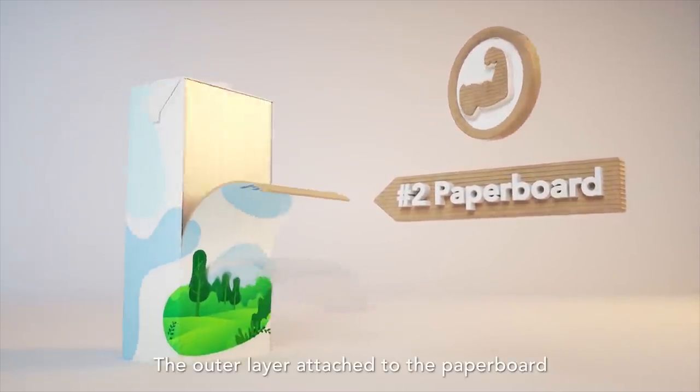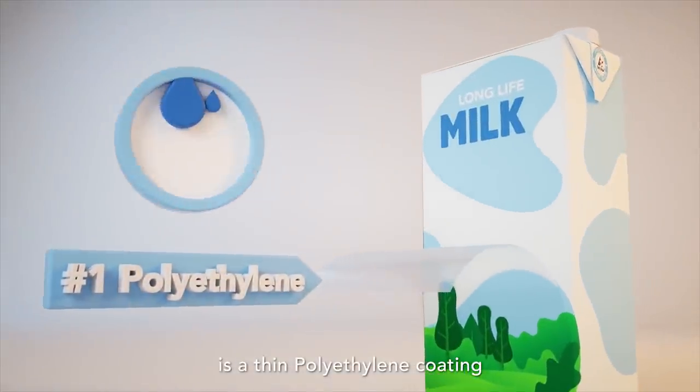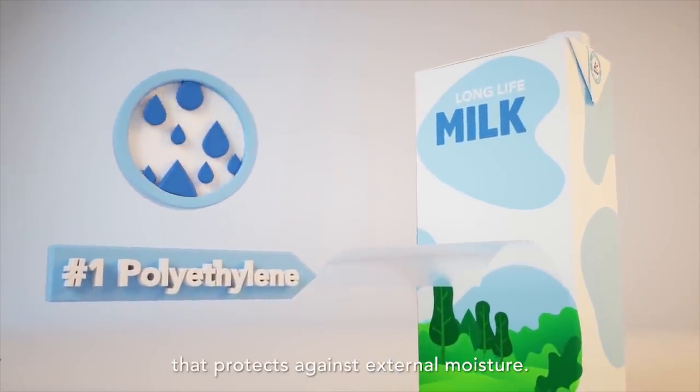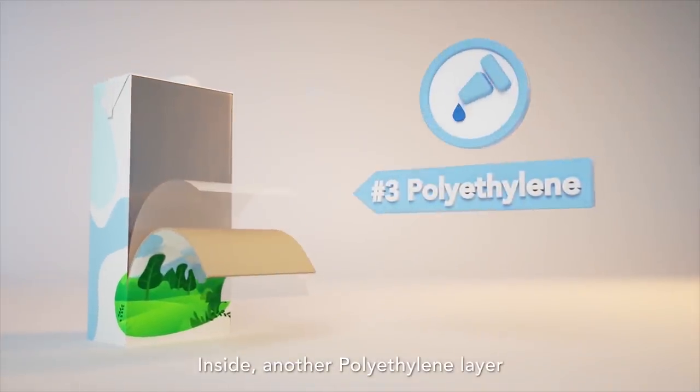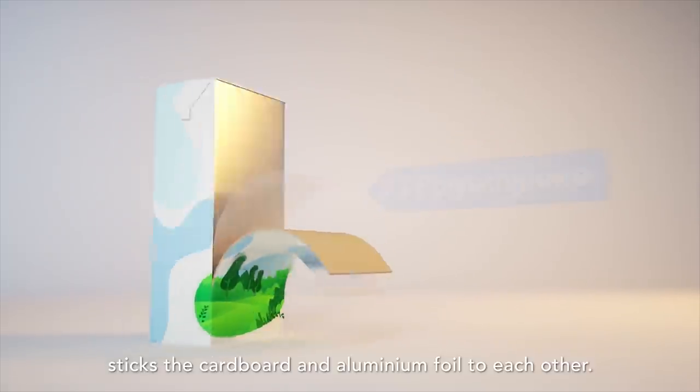The outer layer attached to the paperboard is a thin polyethylene coating that protects against external moisture. Inside, another polyethylene layer sticks the cardboard and aluminium foil to each other.